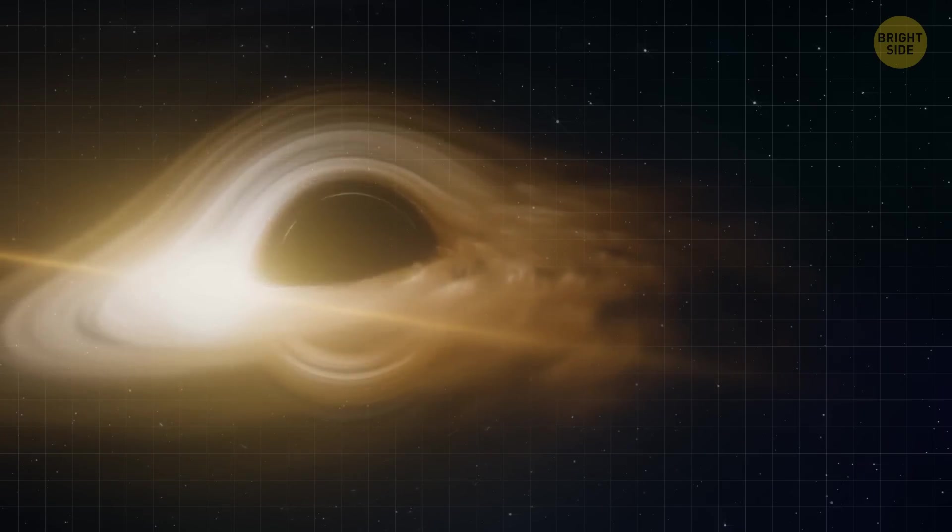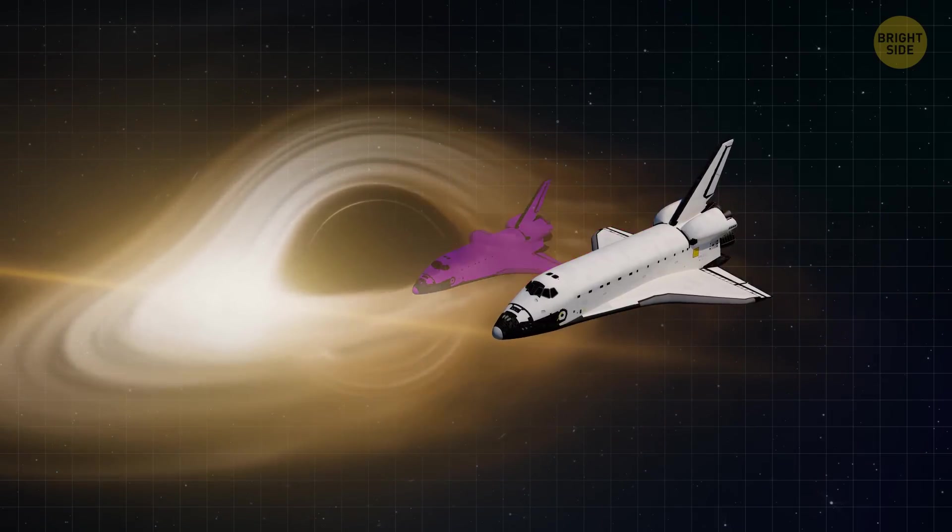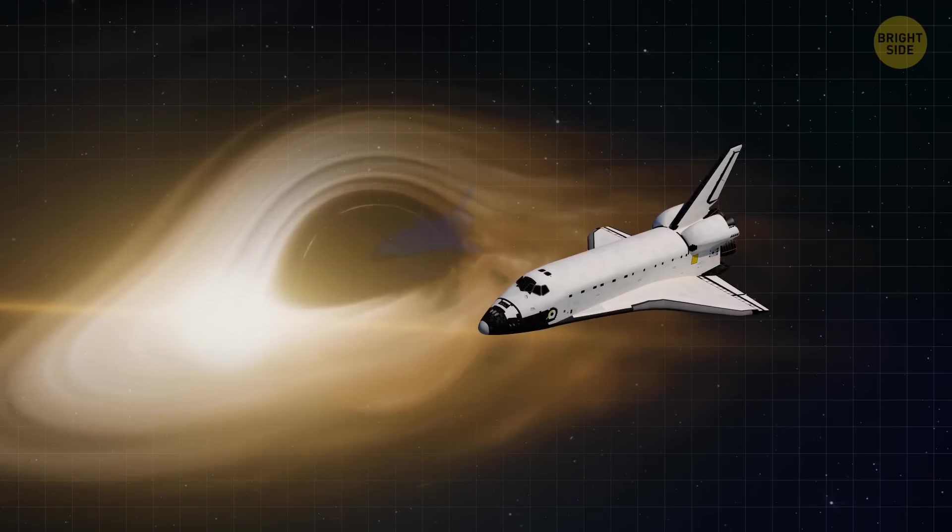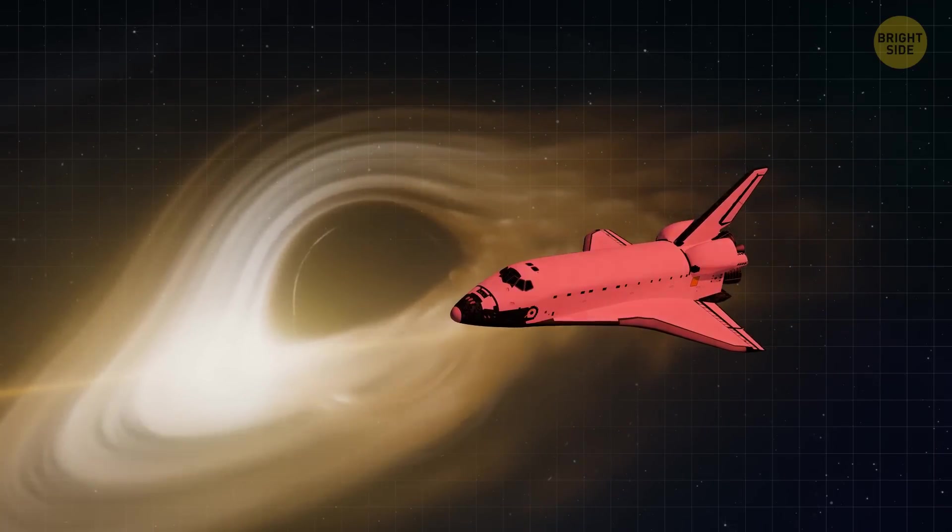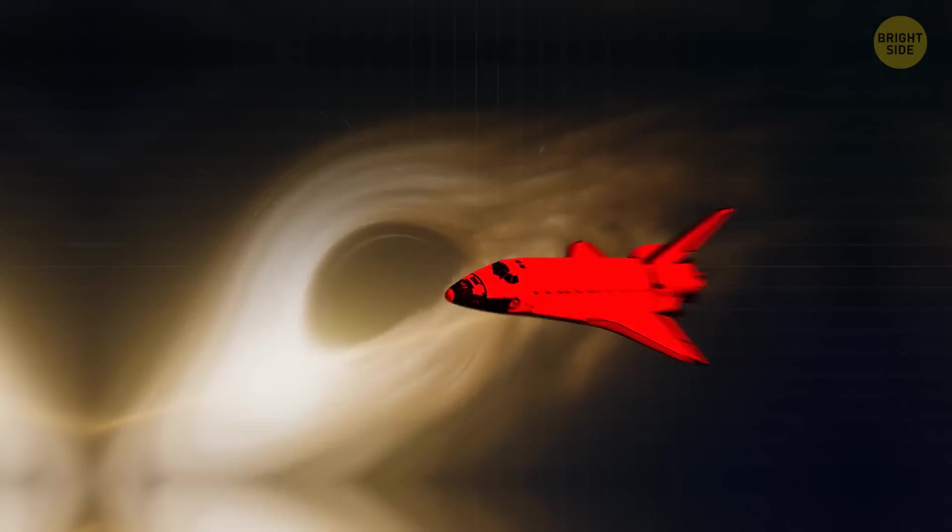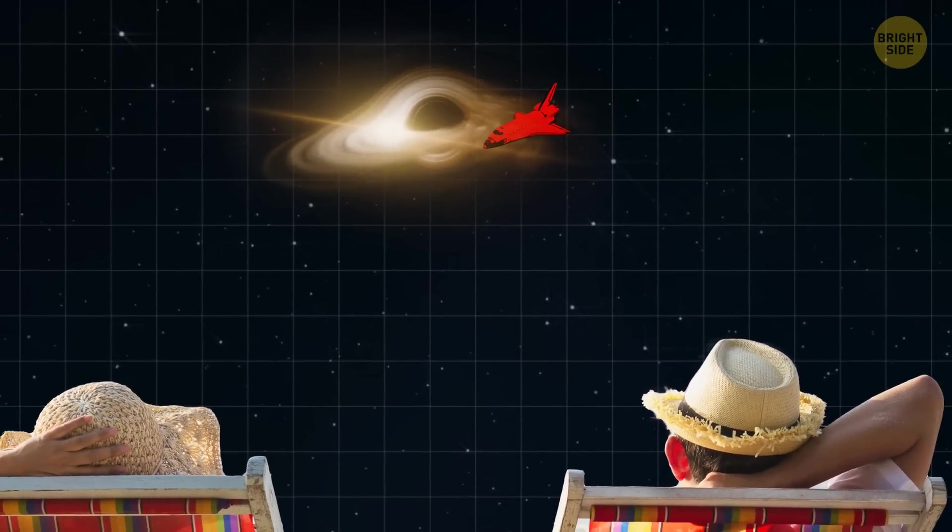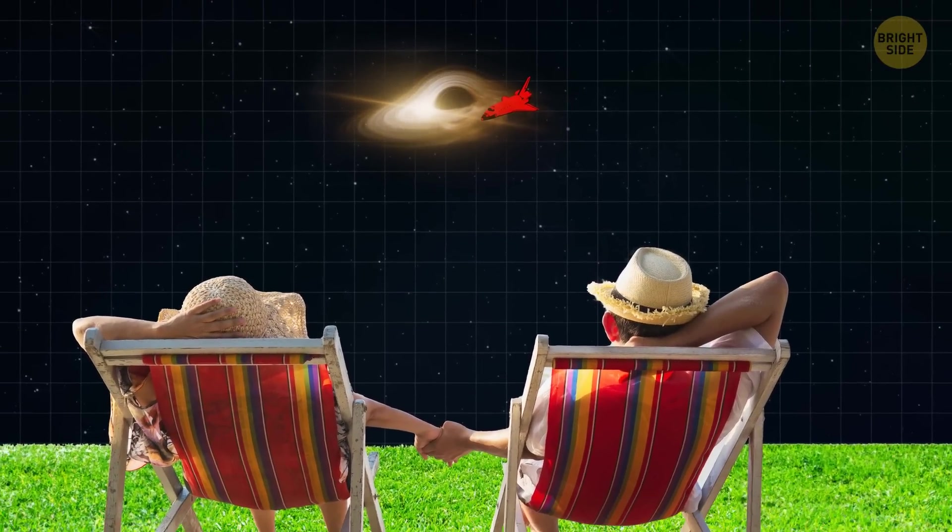The same thing happens near a black hole. The light from the spaceship loses energy due to the black hole's strong gravity. So, the spaceship, which initially had its own color, starts looking redder and redder as it gets closer to the black hole. It's as if the black hole is casting its magical spell, changing the color of the spaceship itself.